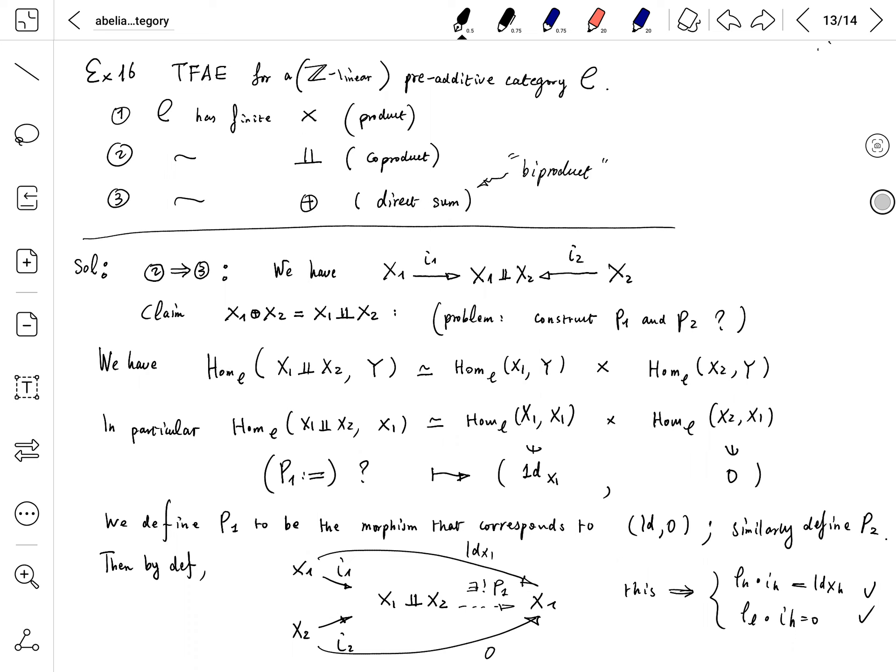Once the biproduct exists, it is both the product and the coproduct of this category. And once it exists for a pair, it will exist for any finite many objects.